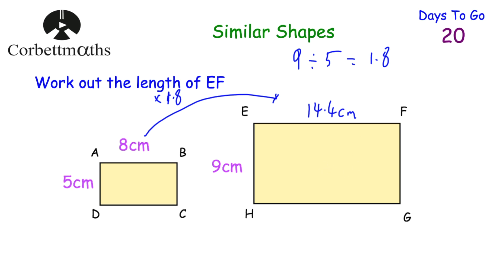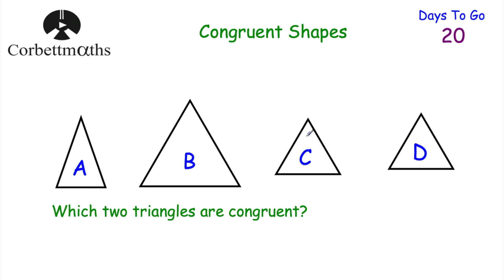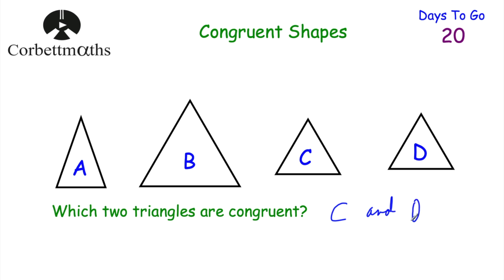Now let's look at congruent shapes. Congruent shapes are identical to each other — the same shape and the same size, with all sides the same length and all angles the same size. Here we've got four triangles A, B, C, and D. Which two are congruent? Triangles C and D are both the same shape and size — A is narrower and taller, and B is taller and wider — so C and D are congruent.